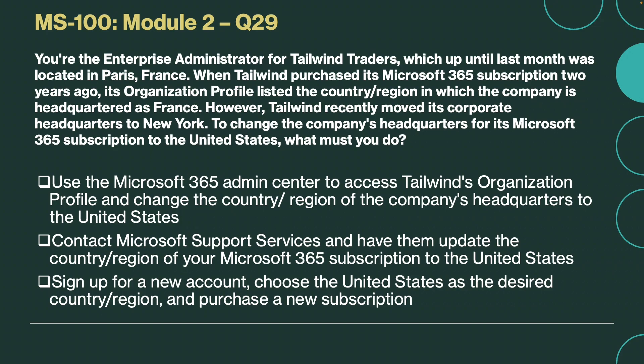You are the enterprise administrator for Tailwind Traders, which up until last month was located in Paris, France. When Tailwind purchased its Microsoft 365 subscription two years ago, its organization profile listed the country region in which the company is headquartered as France. However, Tailwind recently moved its corporate headquarters to New York. To change the company's headquarters for its Microsoft 365 subscription to United States, what must you do?